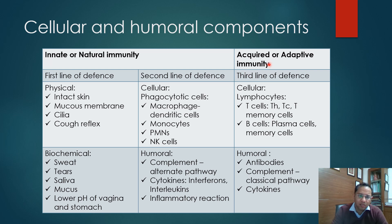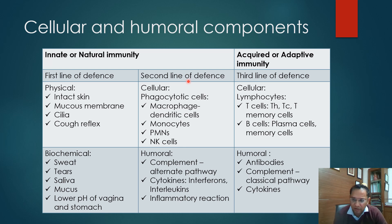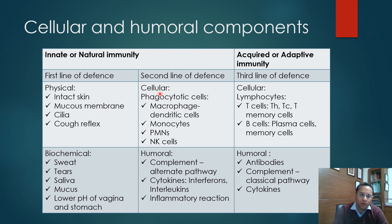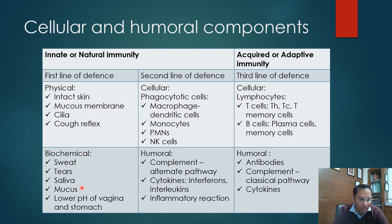Coming to the various participants in immunity: the first and second lines of defense are in innate or natural immunity, while acquired or adaptive immunity — the third line of defense — has both cellular and humoral components. In innate immunity there is both physical, biochemical, humoral, and cellular components. Physical means the intact skin, mucous membrane, cilia, cough reflex — the physical barriers we have. Biochemical barriers are various secretions like sweat, tears, saliva, mucus, and the lower pH of the vagina and stomach.